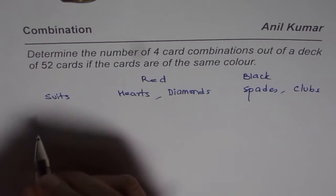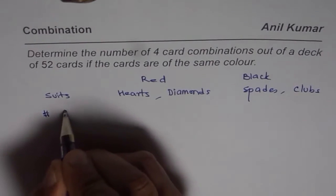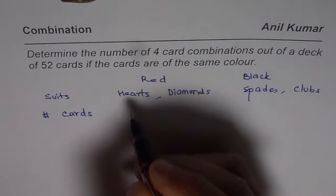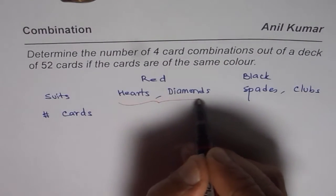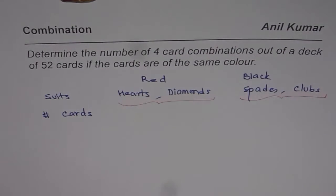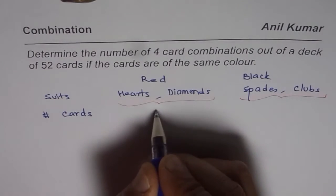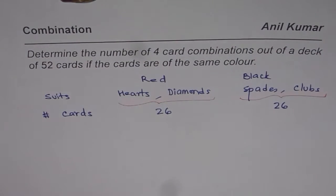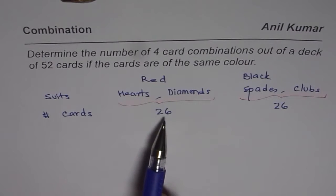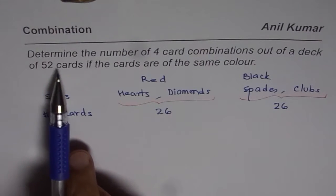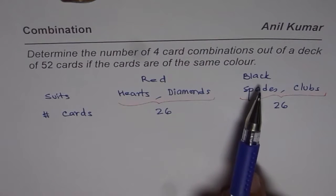For red, how many cards are there? The number of red cards means you need to combine the ones which have hearts and diamonds, and for black means combine spades and clubs. So these are 13 plus 13, which is 26 cards, and then we have 26 black cards as well. So there are 26 red cards in a deck of 52 playing cards and 26 black cards.